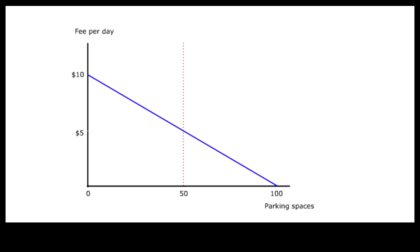Suppose a fee of $5 per day is charged for parking. At this level, the number of spaces demanded is exactly equal to the spaces available — the market clears. Because nobody who is prepared to pay $5 is denied a space, drivers no longer have to waste time hunting for spaces, and those who are not prepared to pay $5 simply look for alternatives.